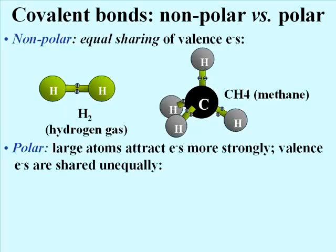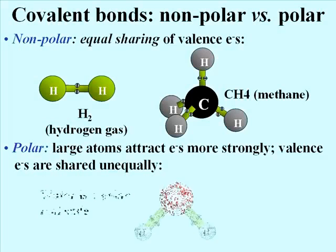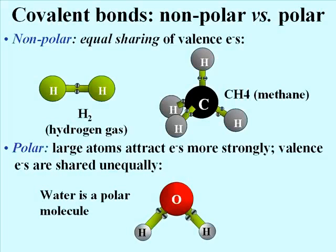In water, the oxygen atom is much larger than the hydrogen atoms. Oxygen's larger nucleus thus draws the electrons from the hydrogen atoms more closely to its nucleus. The result is, the oxygen acquires a partial negative charge. Each hydrogen left with only its proton has a partial positive charge. The Greek letter delta is used to indicate partial charge.